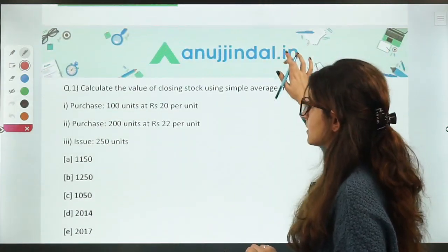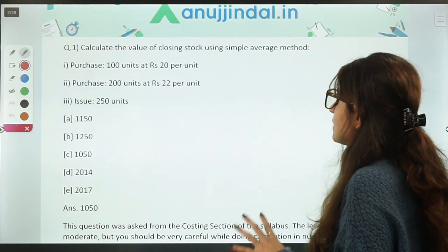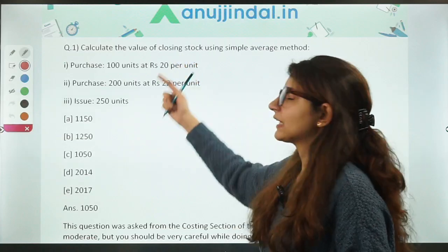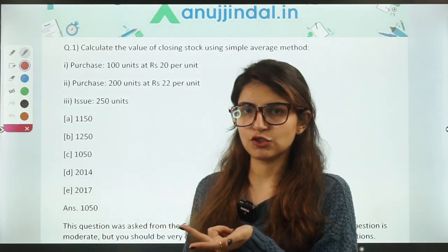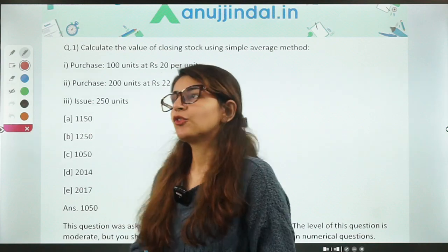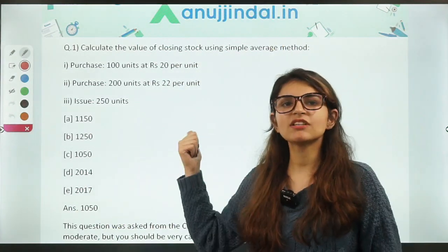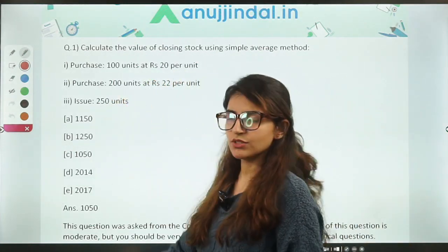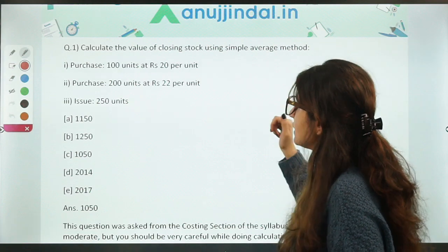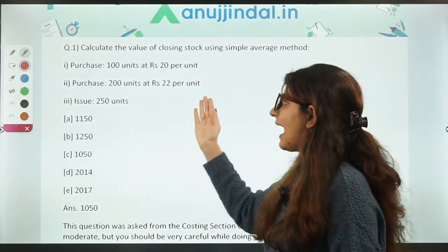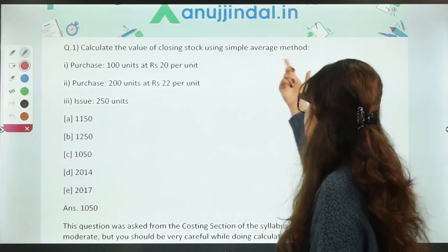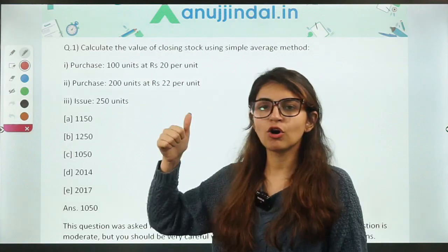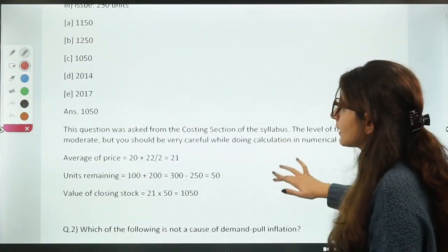The first question was from the costing section: calculate the value of closing stock using simple average method. This is a very easy question. To calculate closing stock value we have various methods — LIFO, FIFO, and simple average method. In simple average method, what you do is add the per unit values and divide by the total number of units. Purchase units are given, per unit price is given, and issue units are also given. A very easy question — if you have done numericals on calculating closing stock, you will do it.